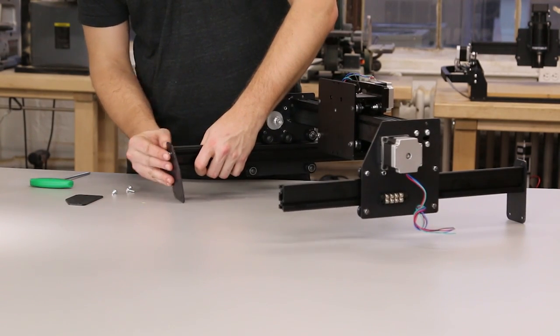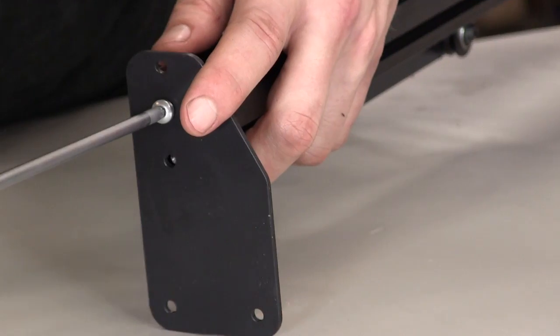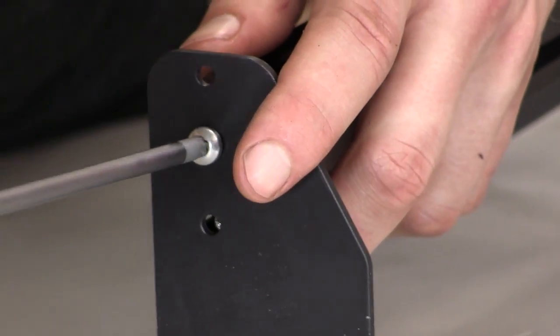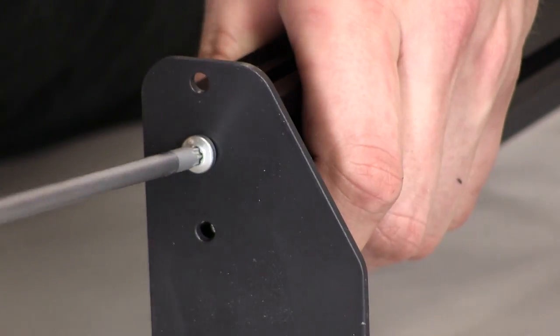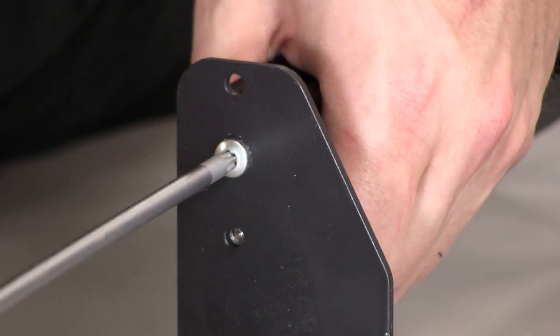Next, put the last two end plates onto the Y-axis, again making sure that the flat side of the end plate faces out with the V-rail of the maker slide.